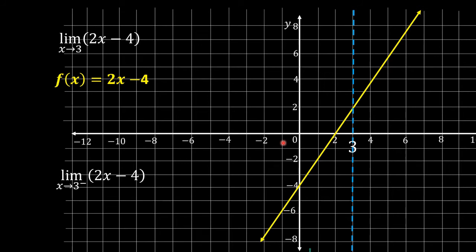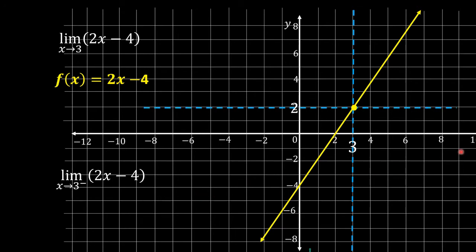When x is negative 1, the point is here. When x is 0, the point on the graph is here. When x is 1, here. When x is 2, the point is here. When x is so close to 3, the value of y or f of x is so close to 2. So our estimate is that the limit of the quantity 2x minus 4 as x approaches 3 from the left is equal to 2.